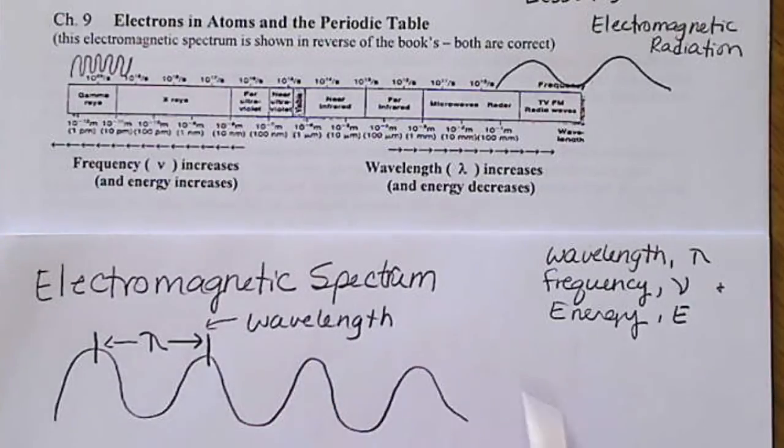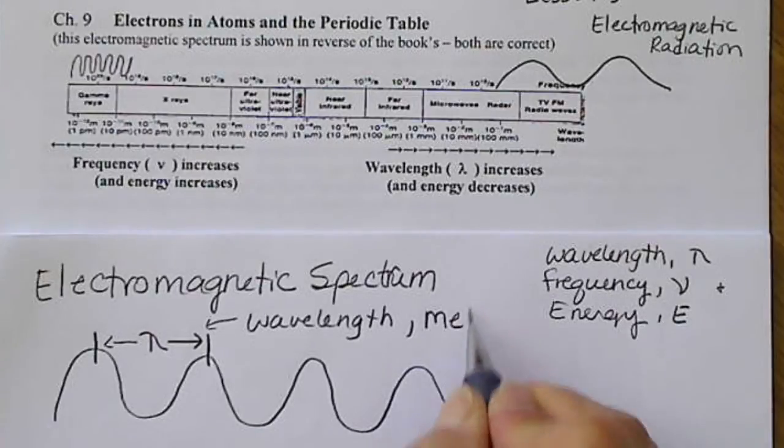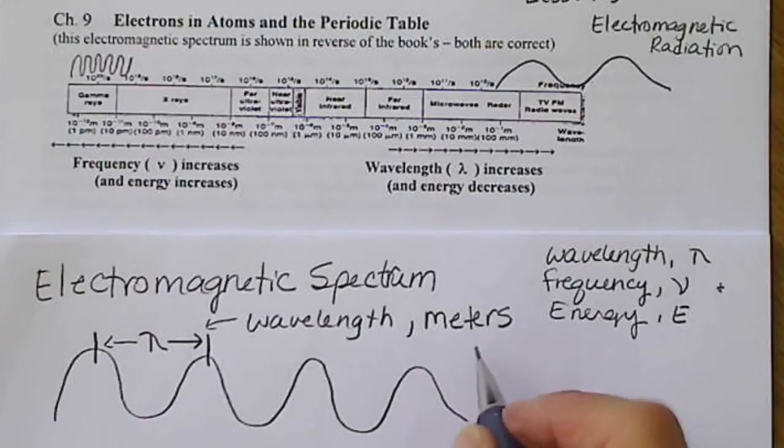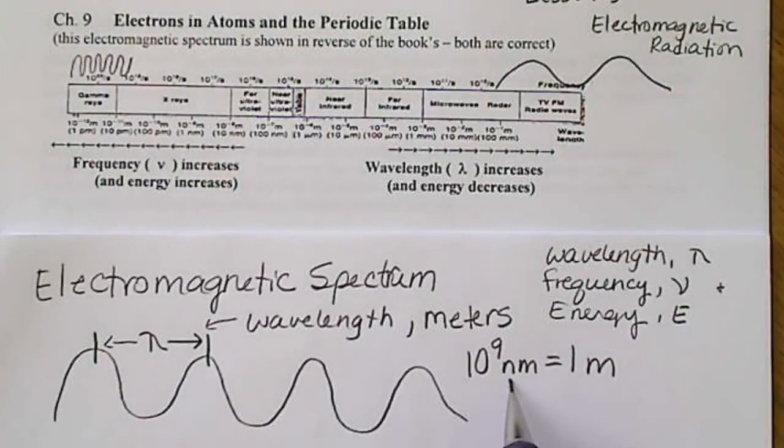We're going to focus more on the visible part of the spectrum. And we'll see that the wavelength for blue light is different than the wavelength for red light. So the wavelength, the metric unit we're going to use is meters. And here we might want to remember that 10 to the 9th nanometers is equal to 1 meter. The wavelength, the visible light is very small. So we generally record that in nanometers.